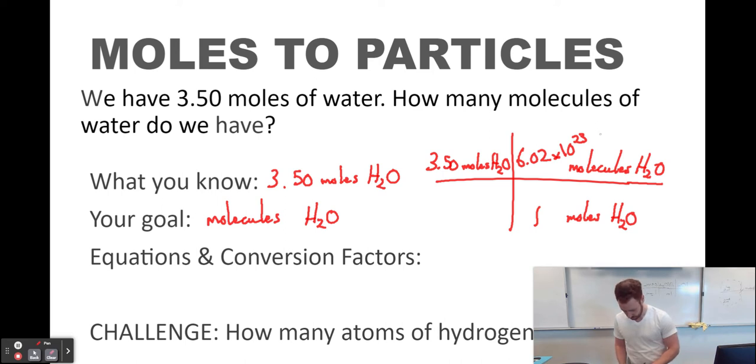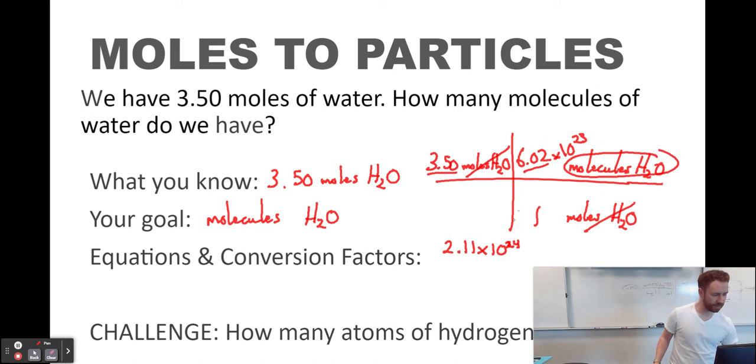So we multiply 3.5 times 6.02 times 10 to the 23rd. We should get 2.107, which I'm going to write as 2.11 with significant figures because we've got three sig figs here and here. 2.11 times 10 to the 24th power. Units, moles of H2O canceled out. Molecules of H2O is left. So our units are molecules. It's weird. It's like super laggy, so it's hard to write. Molecules of H2O.